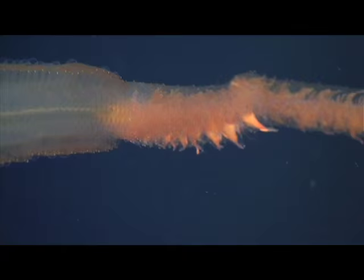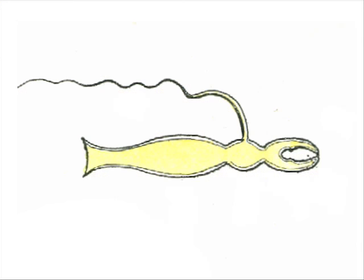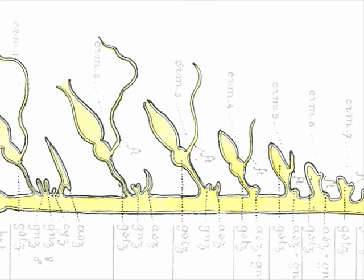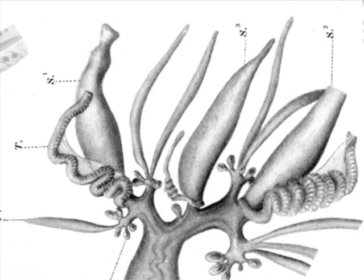Here's Dr. Casey Dunn. So instead of just being a single individual, they're colonial animals. They all grow from the same embryo just through a budding process, and they remain attached and they share a circulatory system. But the really striking thing about siphonophores is that not all of the members of these colonies do the same things.